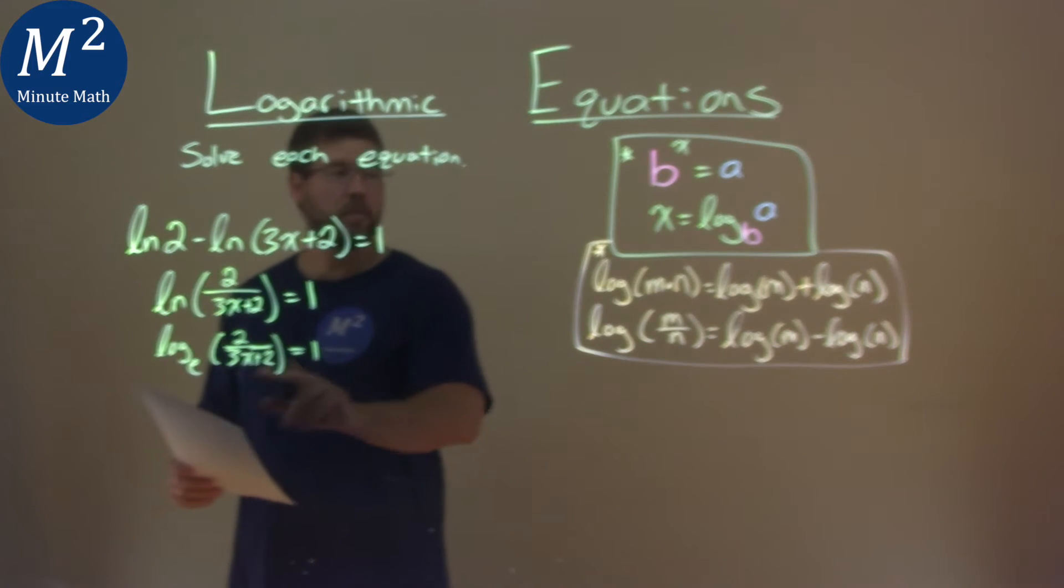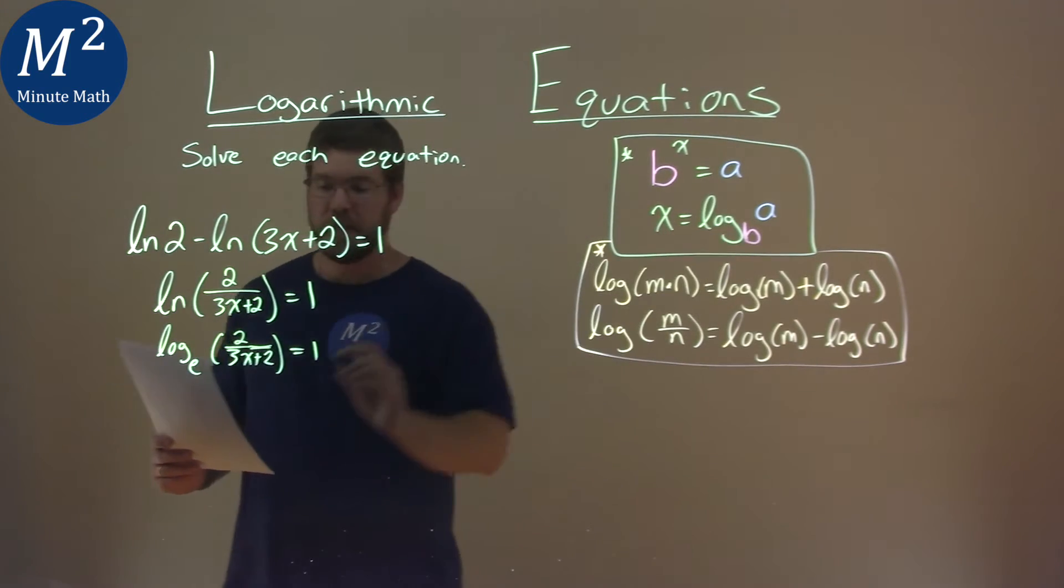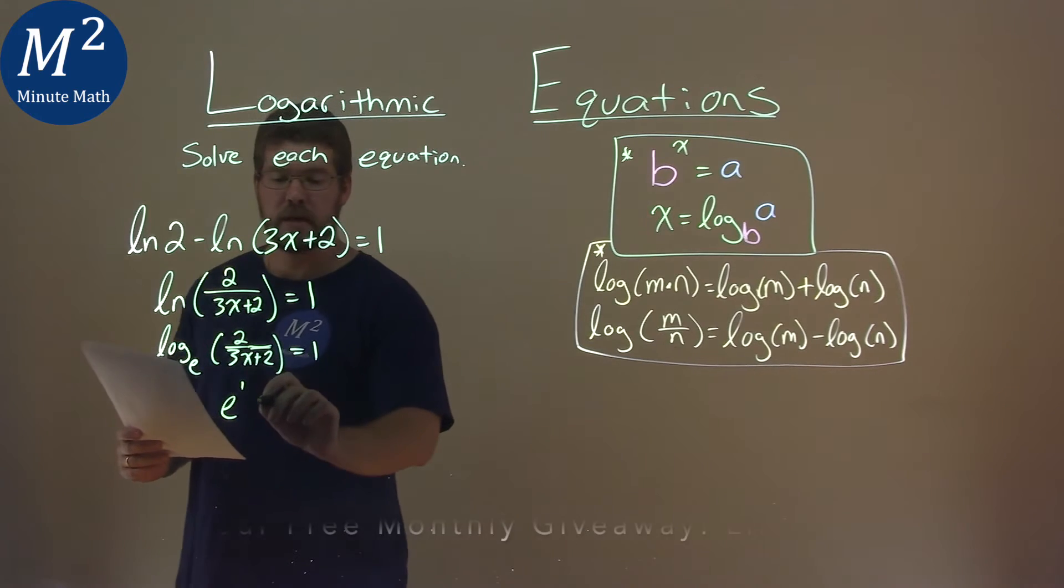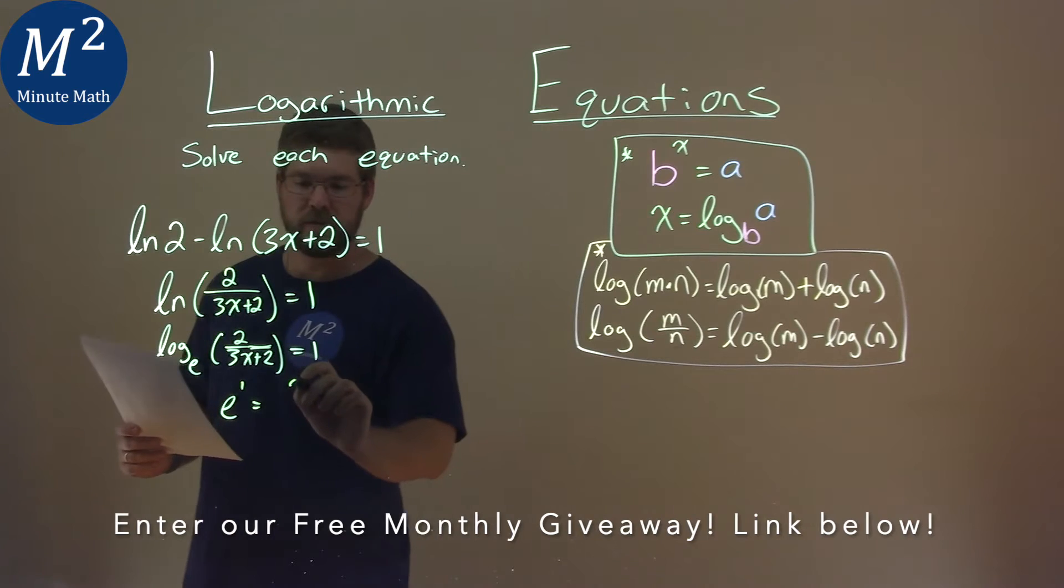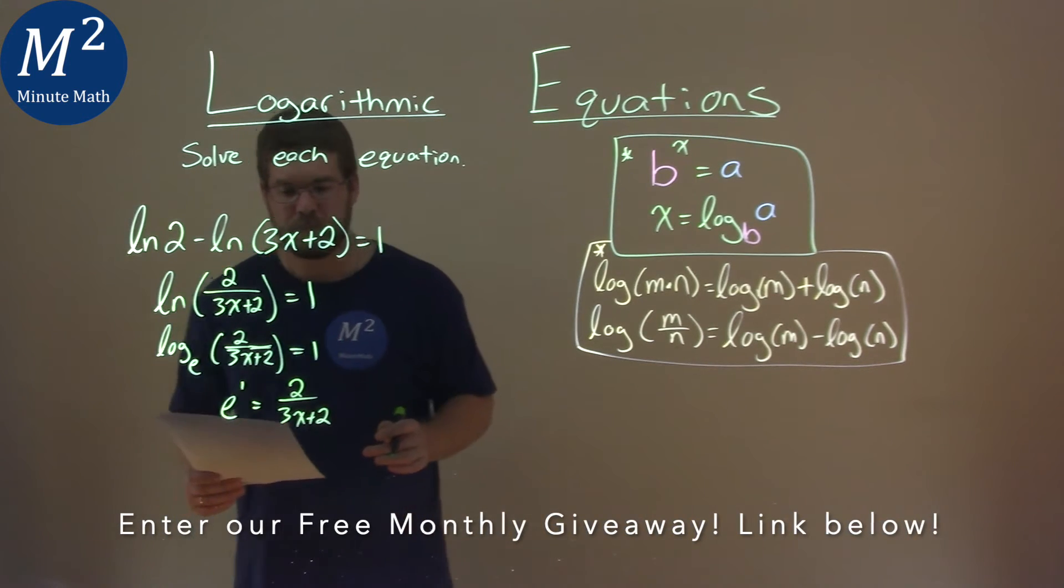From there we're going to use our top formula. Our base is e and so we have that b value e. We're going to raise it to what we're equal to which is 1, which is nice, and that's going to be equal to what we're taking the logarithm of, our a value, which is that 2 over 3x plus 2.